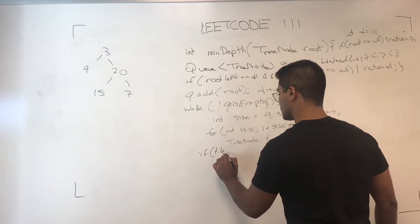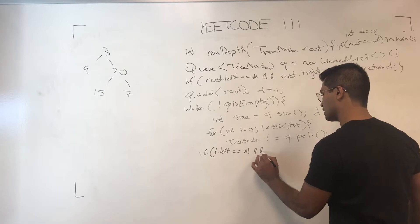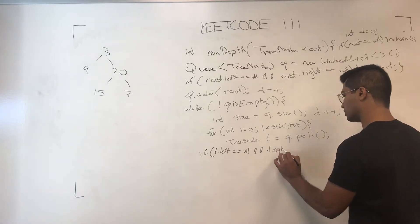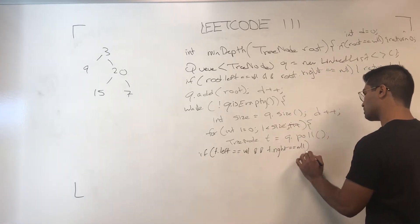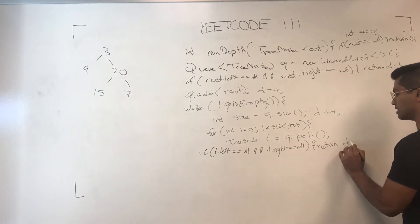So if left is null and t dot right is null, we return d.